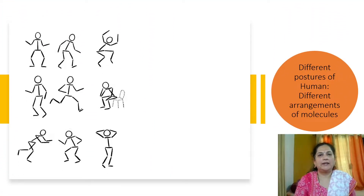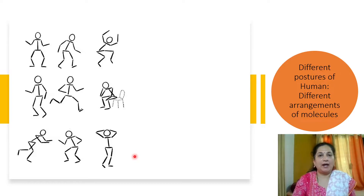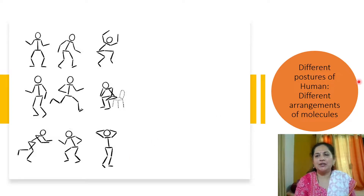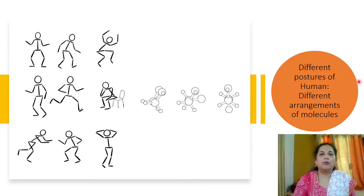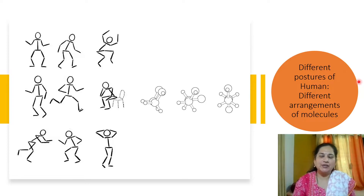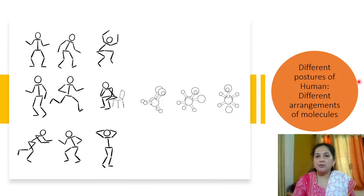Look at this picture. Here, a person is making movement and various postures of a person are shown in this picture. Now, similarly, imagine that a molecule is making movement. The molecule will attain various arrangements in space, and these arrangements are called confirmations.